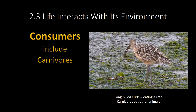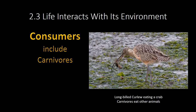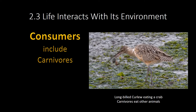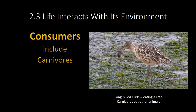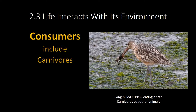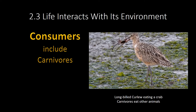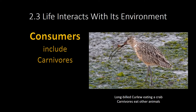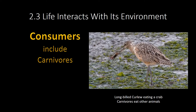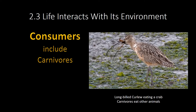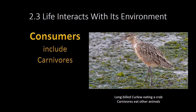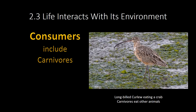Consumers also include carnivores, which basically eat other animals. This long-billed curlew here is eating a crab. If you watch closely, he's picking off the claws of the crab — you can see the claws right there. Once he gets both claws off, he swallows the animal whole. And then this bird will pick up the two claws and swallow them as well.